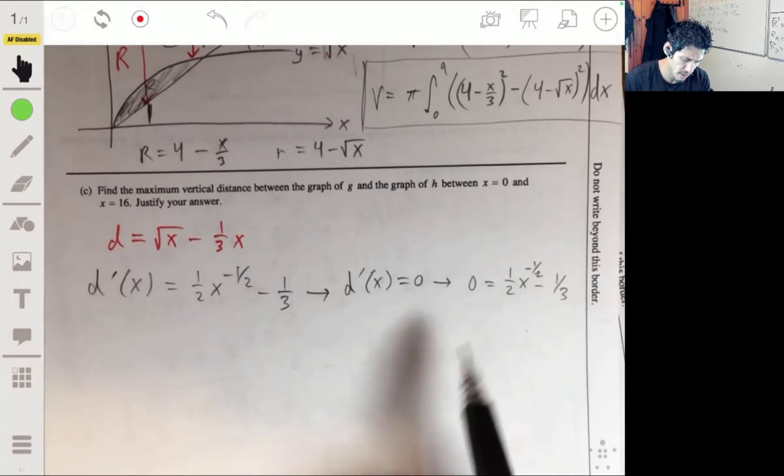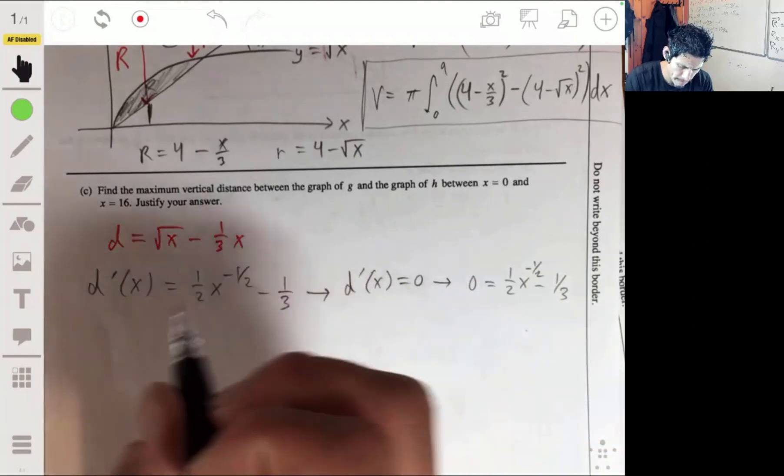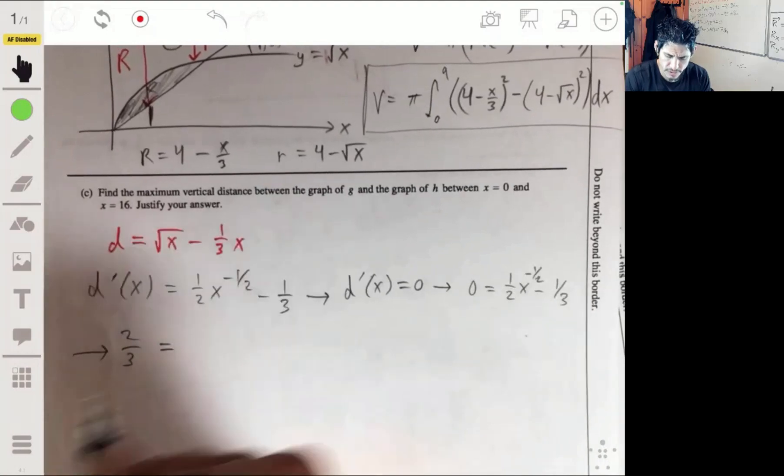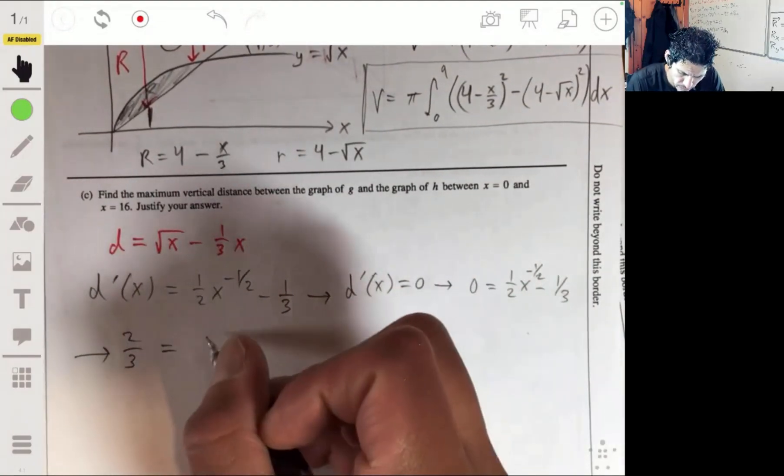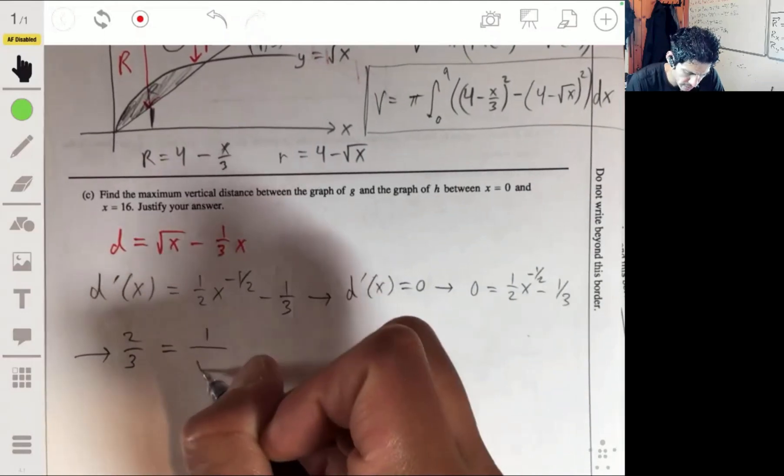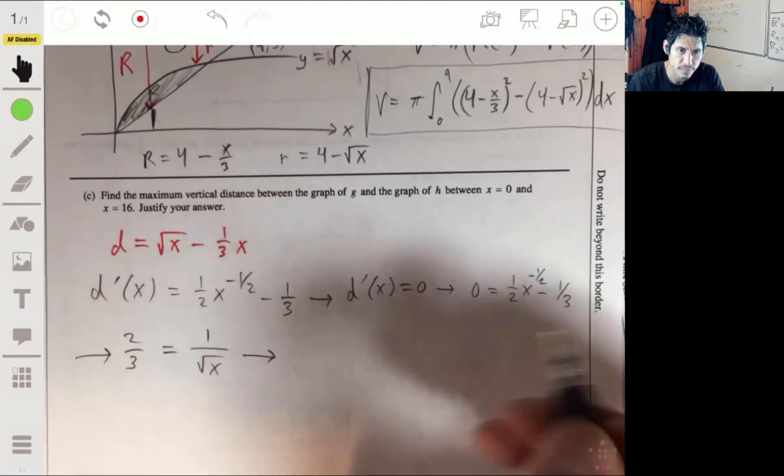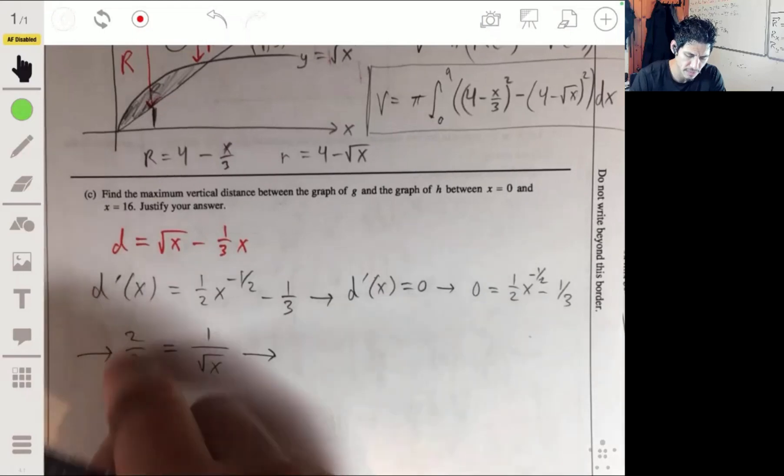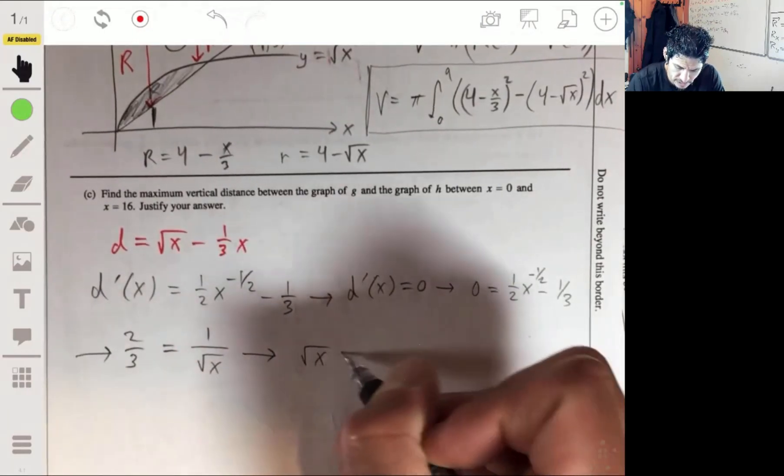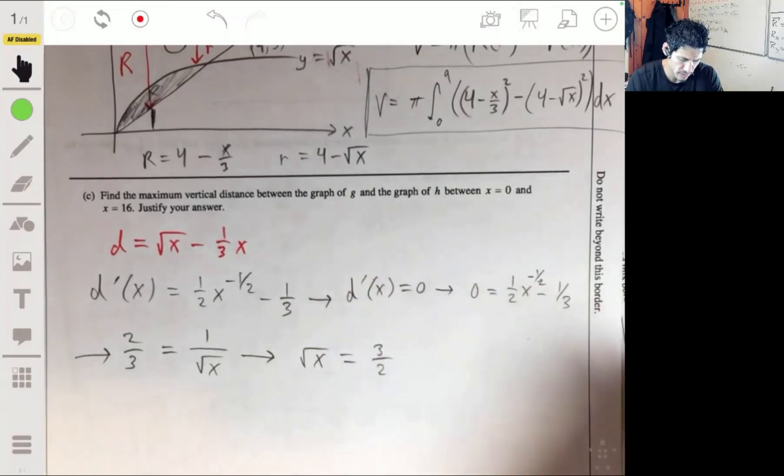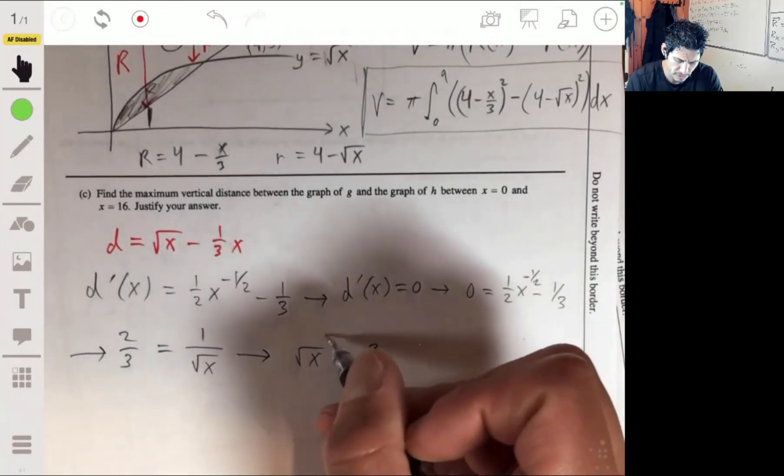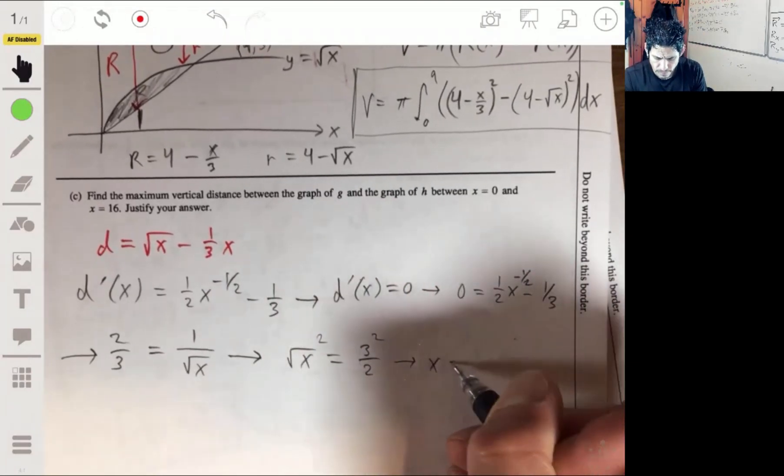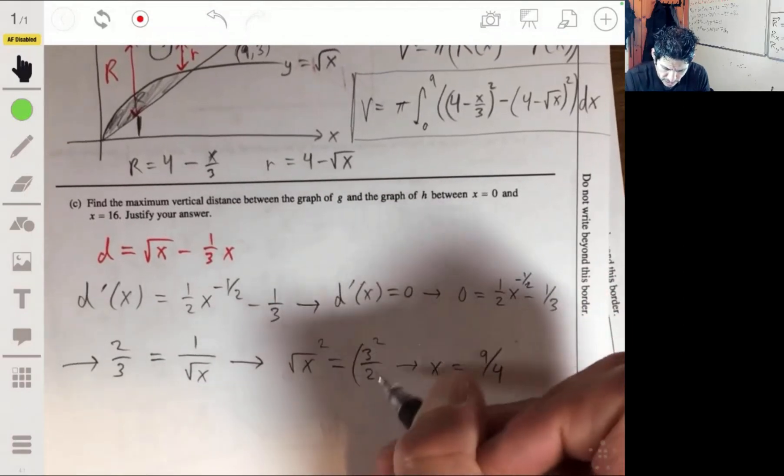So 0 is 1/2 x to the negative 1/2 minus 1/3. Solving this: add the 1/3, multiply by 2. So we'll get 2/3 is equal to 1 over the square root of x. Solving for x, let's take the square root on top. Multiply both sides by the square root and then multiply this side by 3/2. So we'll get the square root of x equals 3 over 2. And that means after we square both of these, we'll get x equals 9 over 4, because this whole thing is squared.